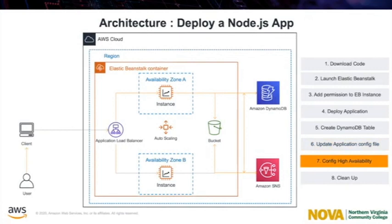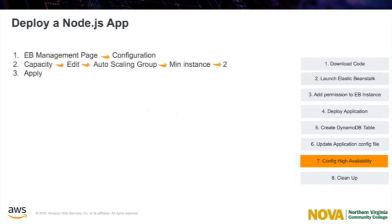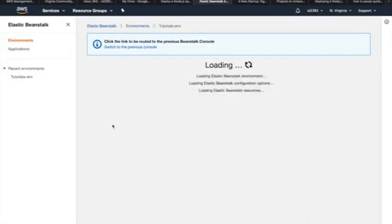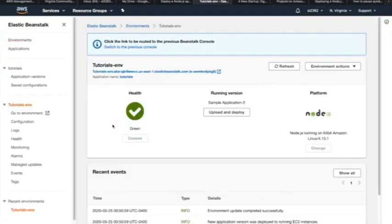Finally, I will show how to configure the environment's autoscaling group with a higher minimum instance count. Running at least two instances at all times prevents the web servers in your environment from being a single point of failure, and allows you to deploy changes without taking your site out of service. I will not change the actual number of instances for the demonstration, but I will show you the way how to do it.